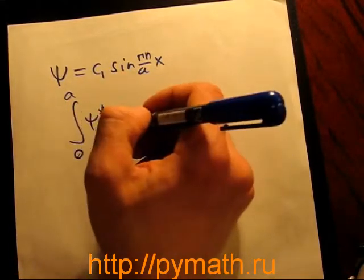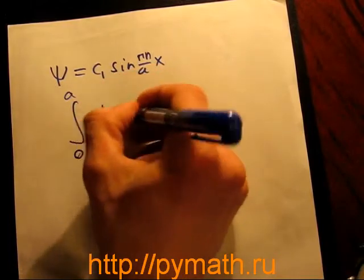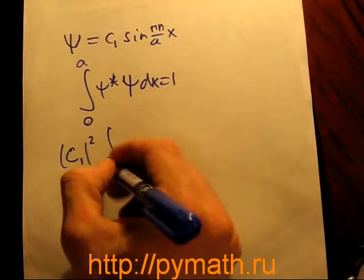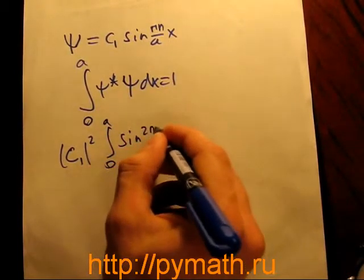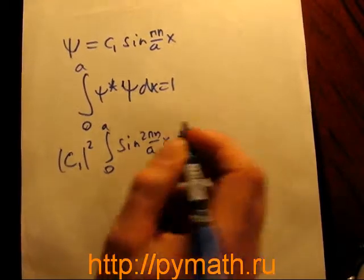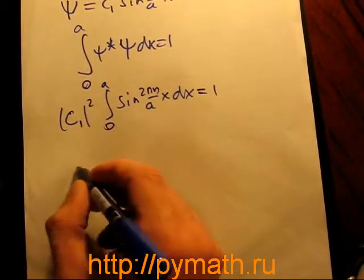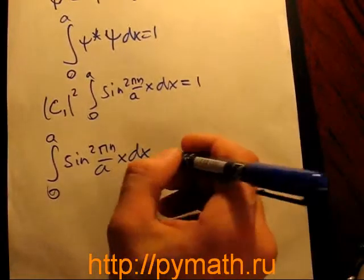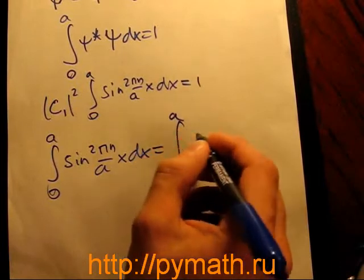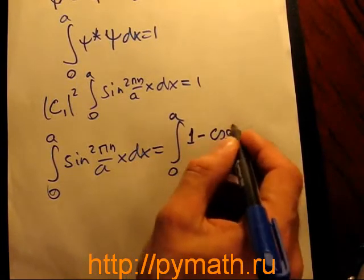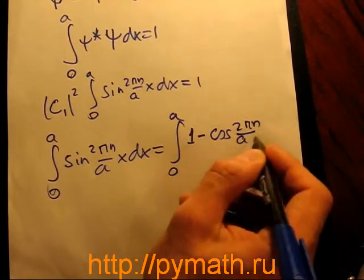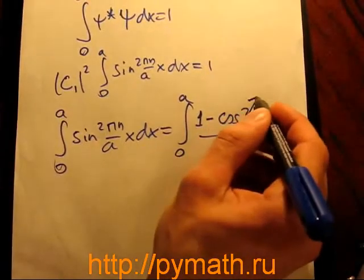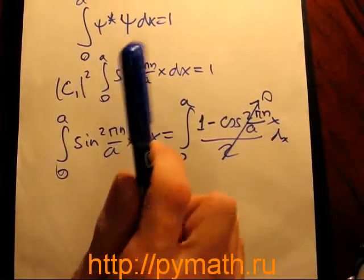Let us normalize this equation result. We get c₁² ∫₀ᵃ sin²(πn/a·x)dx = 1. I'll write the integral equals ∫₀ᵃ (1-cos(2πn/a·x))/2 dx. And it can be strictly shown that the integral of the cosine term equals zero as the result.